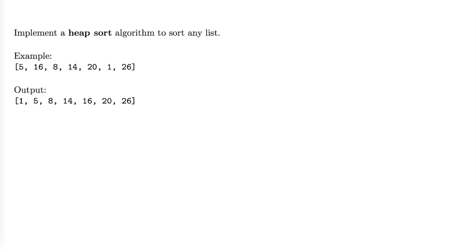A heap is a binary tree such that every parent node is greater than both of its children nodes — that's what we would call a max heap. If we wanted to use a min heap, that's going to be where every parent node is less than or equal to its children.